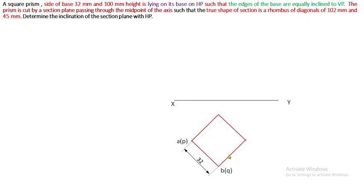Top square is ABCD, and PQRS is the bottom square or base of the square prism. Extend the projectors and complete the top view. The height is 100 mm and it is 32.